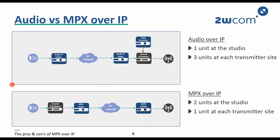Audio over IP requires at the transmitter side: an audio over IP codec, a stereo generator, an RDS encoder, and in many cases a fairly expensive sound processor. With MPX over IP, looking at the lower block diagram, you will notice the difference — MPX over IP requires only one unit at the transmitter side because sound processing is done at the studio.